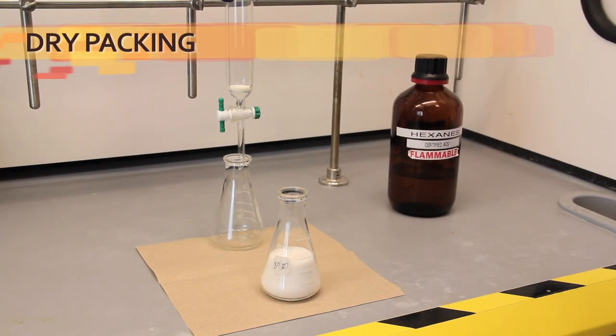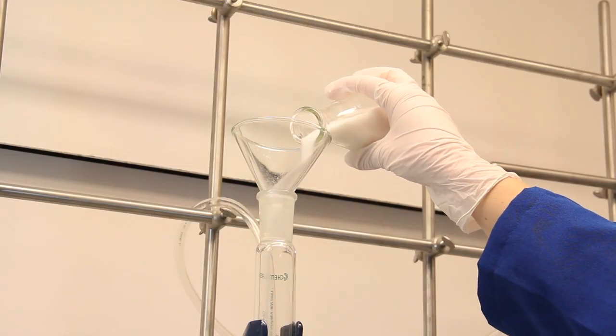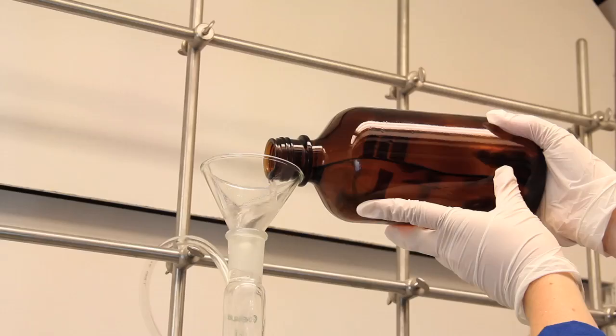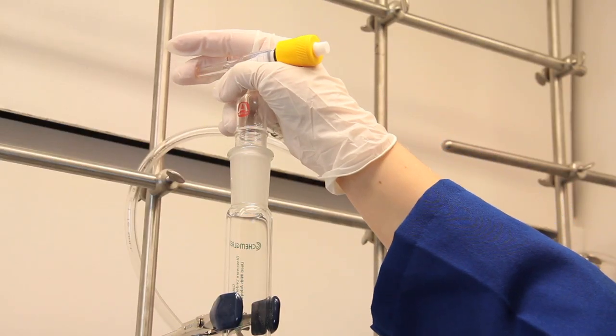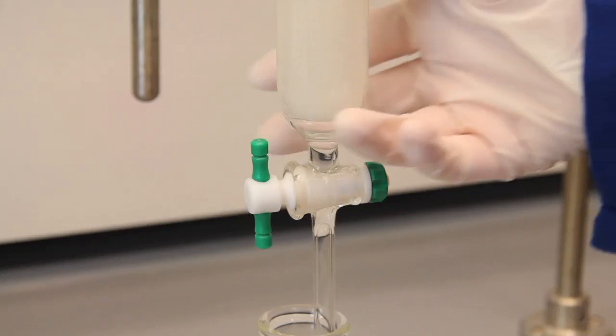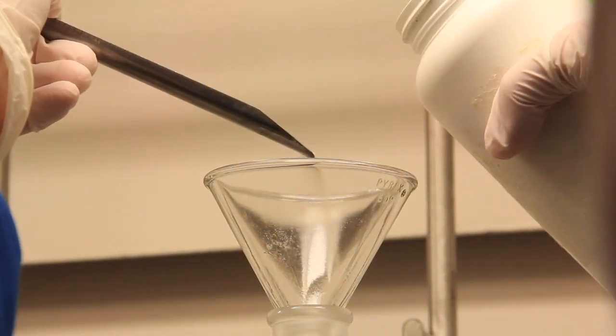An alternate method is called dry packing. You add dry silica gel to the column and flush with solvent. Continue flushing until all air bubbles are expelled and the column feels cool. I use air pressure to push most of the solvent through, but keep about an inch of it on top.